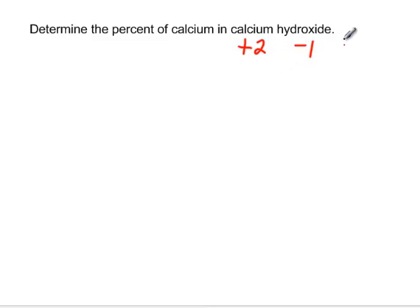So if you crisscross these guys, we end up with Ca and then OH with a 2 after it. And the 2 from the calcium goes after the hydroxide, and vice versa. So here's our formula.